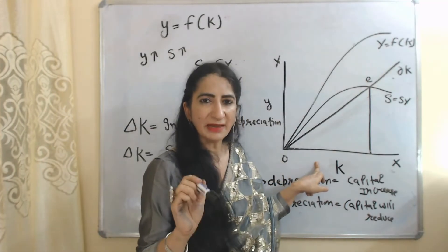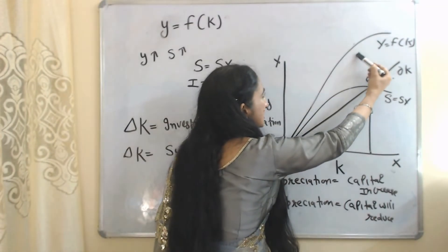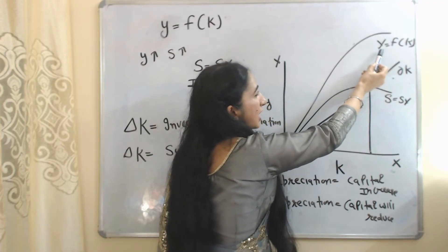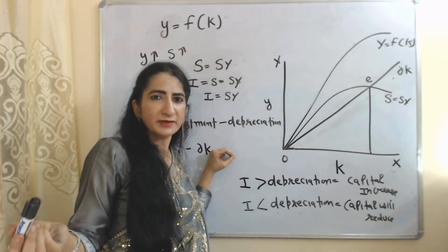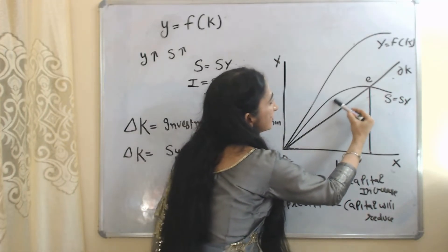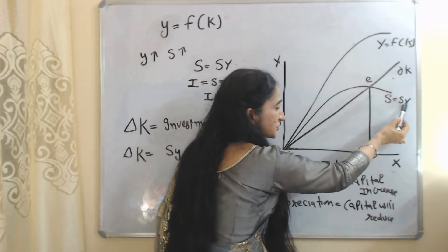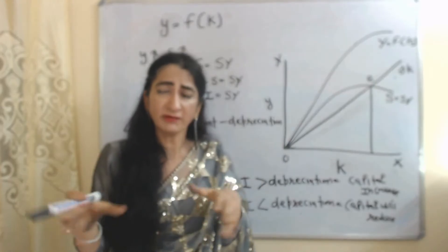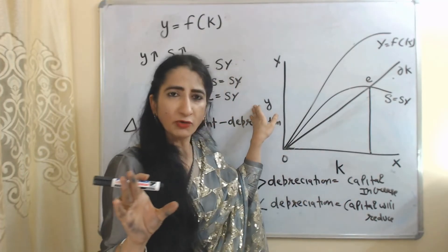In this diagram, the X-axis has capital per worker and the Y-axis has output per worker. One curve represents that as capital per worker increases, output per worker also increases, because output per worker is a function of capital per worker. As output per worker increases, national income increases, and as national income increases, saving also increases. The saving curve represents sY, which also equals our investment.